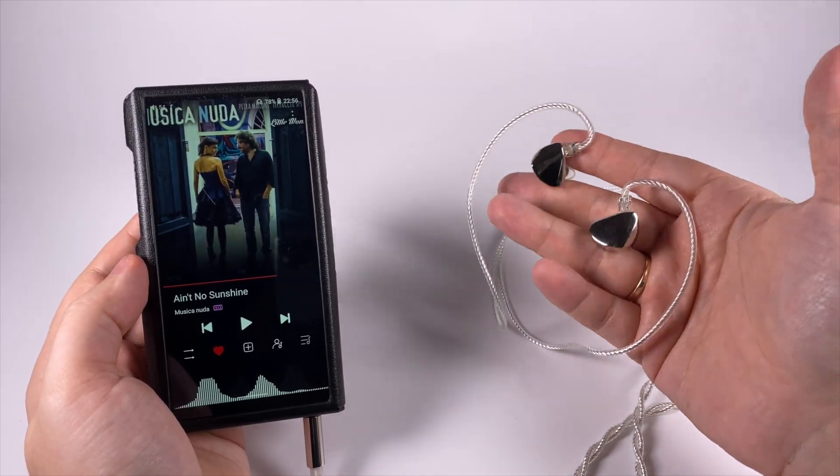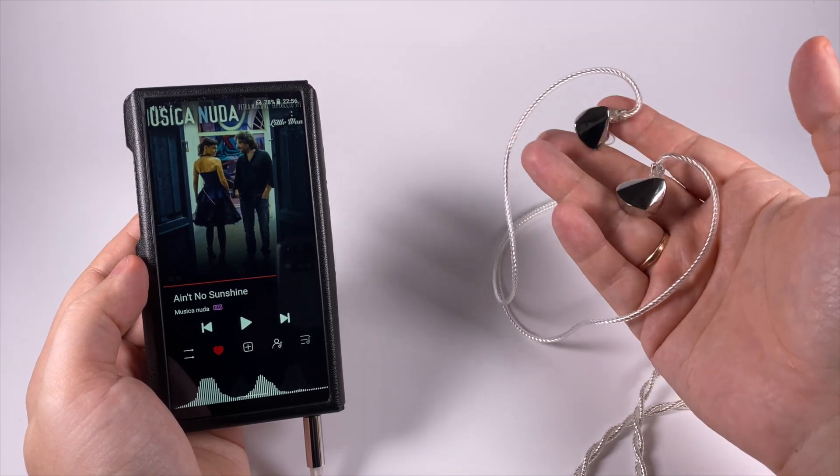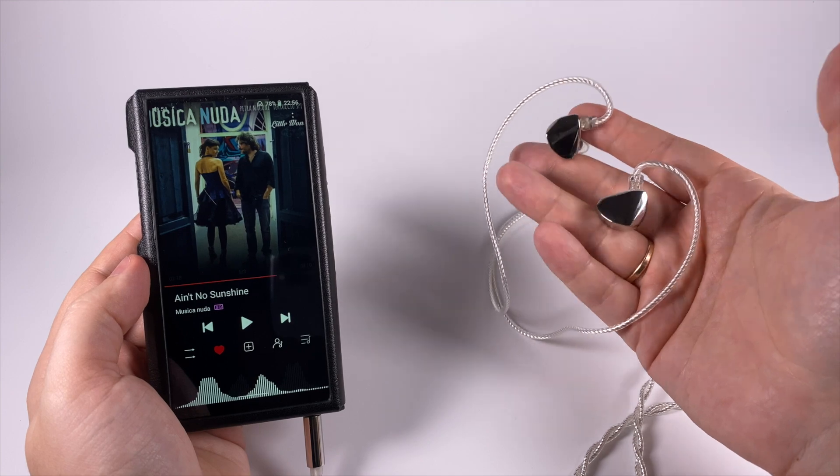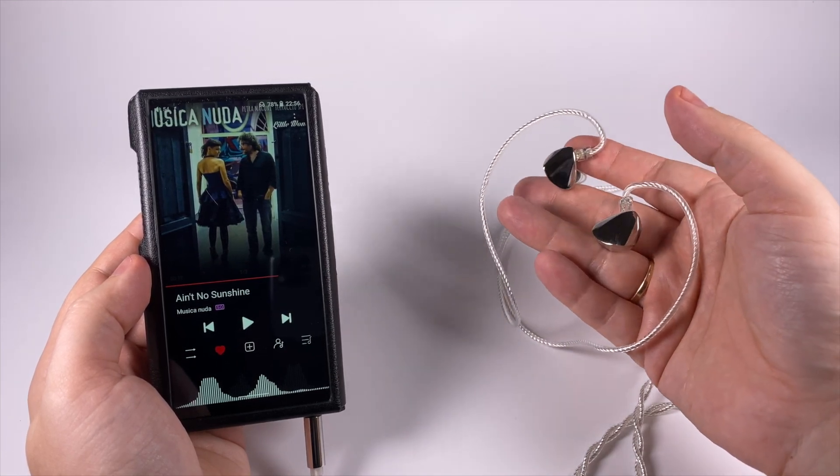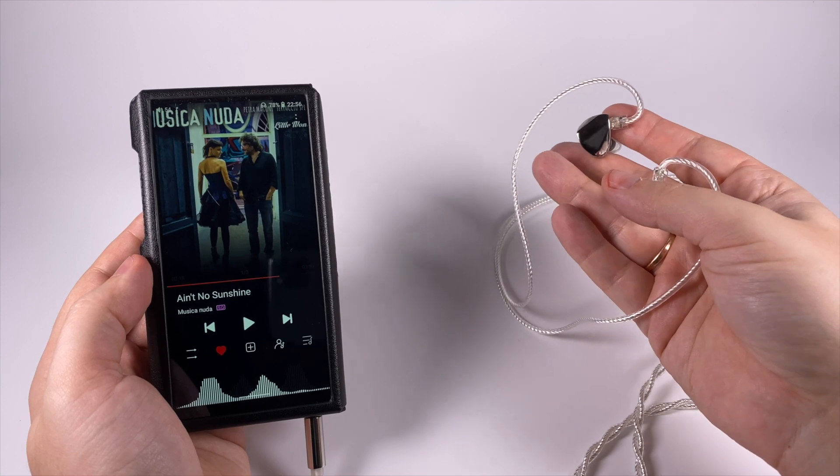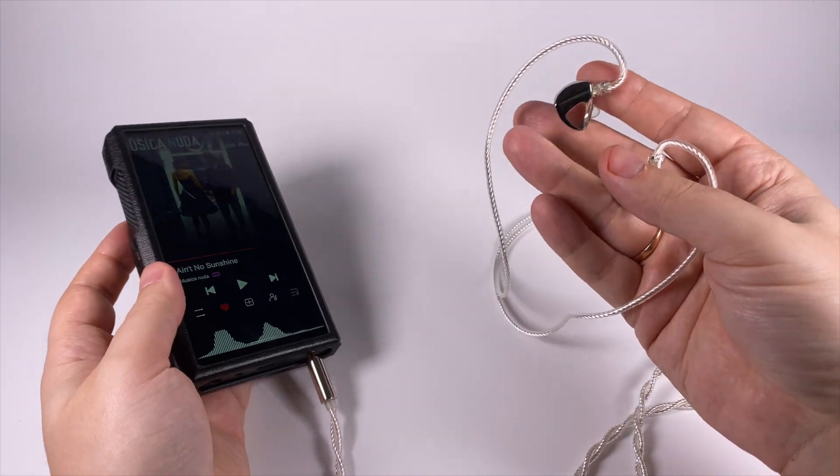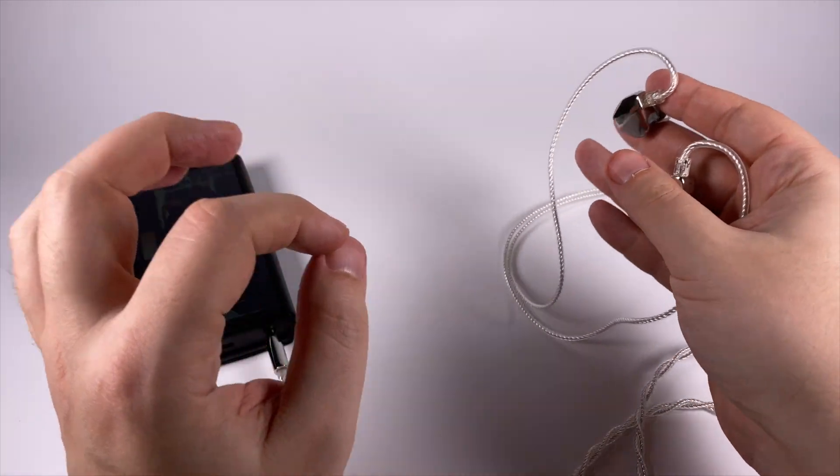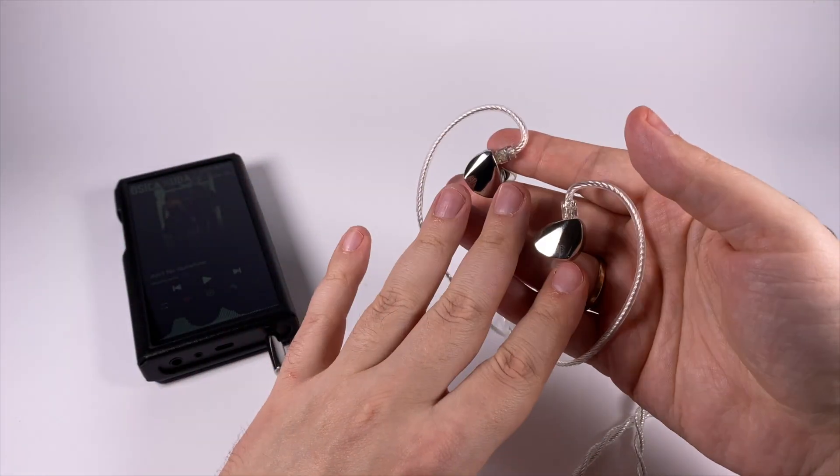That's why my first example is Music Anuda and No Sunshine. The double bass here sounds really fun. You can hear all the nuances, you can hear the resonance of wood, you can hear the movement of strings, so really impressive. Thanks to the slightly boosted upper mids, it builds a striking contrast with Petra Mahoney's vocals, giving you that interesting balance.